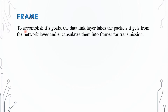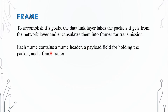To accomplish its goals, the data link layer takes the packets it gets from the network layer and encapsulates them into frames for transmission. We have the packet that comes from the network layer and encapsulate it at the data link layer. Each frame contains a frame header, a payload field for holding the packet, and a frame trailer.